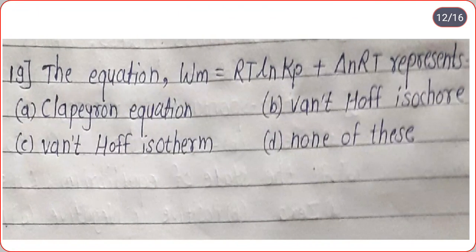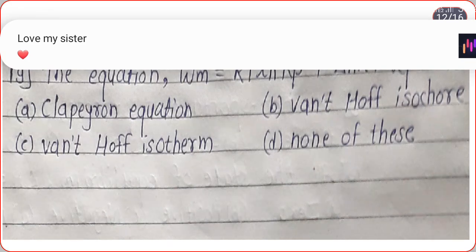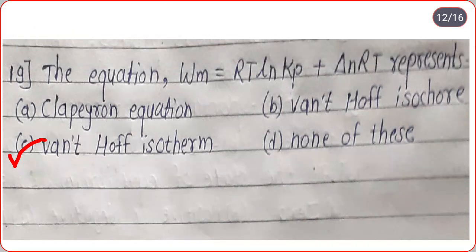The equation W_max = RT ln(K_P) + ΔN·RT represents which equation? Options are Clapeyron equation, Van't Hoff isochore, Van't Hoff isotherm, or none of these. The correct option is C — this equation represents the Van't Hoff isotherm.